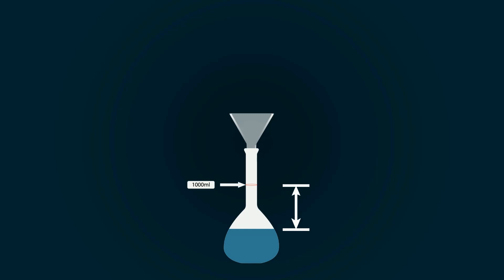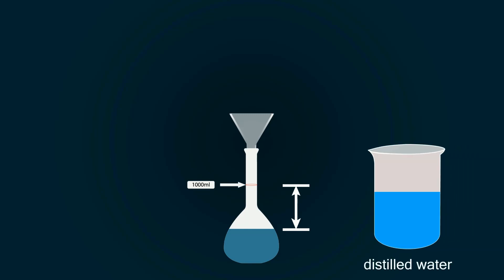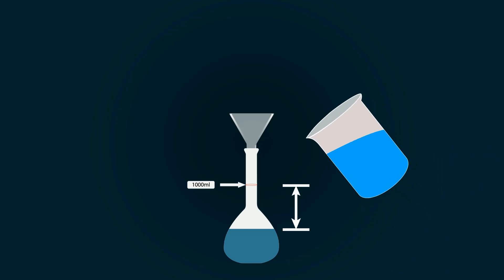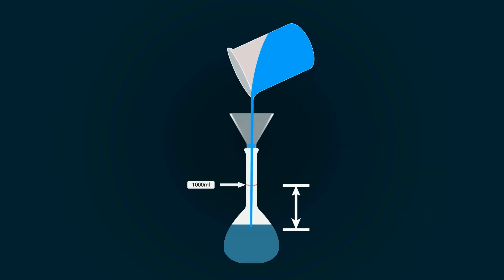For that, you have to add more distilled water. Take distilled water into an empty beaker and pour it into the volumetric flask to fill it up to the 1000 milliliter point.